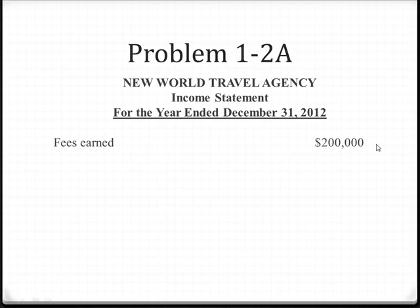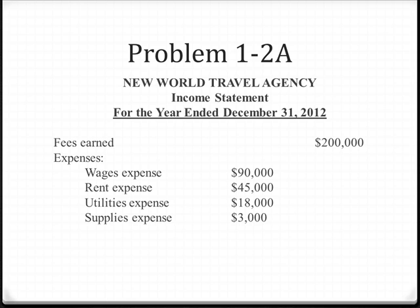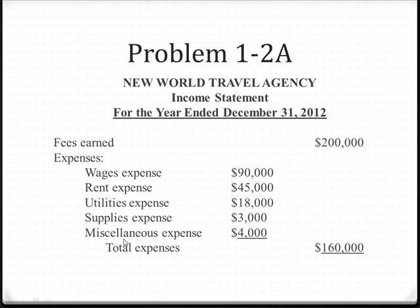If there were any other revenue accounts, we would list those. However, for this particular problem there's only one revenue account. So the next thing we're going to do is list the expenses in order of greatest to least, with miscellaneous last. So we put wages expense $90,000, rent expense for $45,000, utilities expense $18,000, supplies expense $3,000, and then miscellaneous expense for $4,000. We then total all expenses to get total expenses of $160,000, bringing this out to the right-hand column.